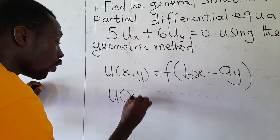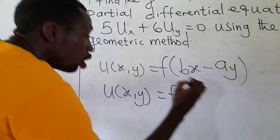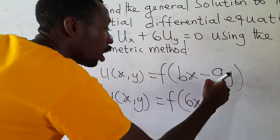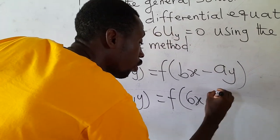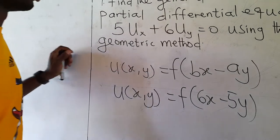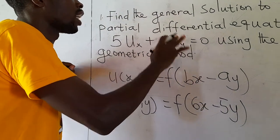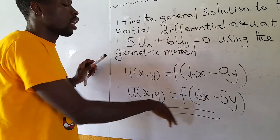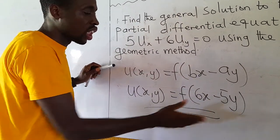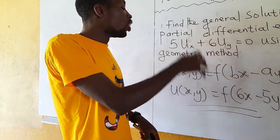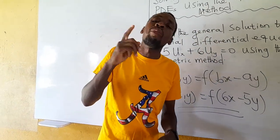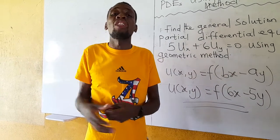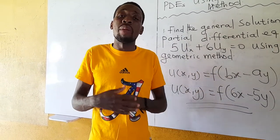So U(x, y) equals a function F of (6x minus 5y). This becomes the general solution to this first order constant coefficient partial differential equation using the geometric method. With this, if some boundary or initial conditions are given to us, we simply substitute to get one particular solution. We will solve another example where boundary or initial conditions are given so that you will be fully familiar with that process.